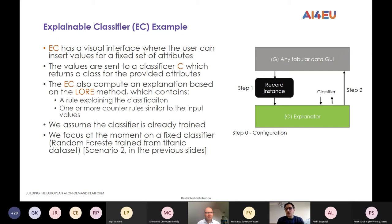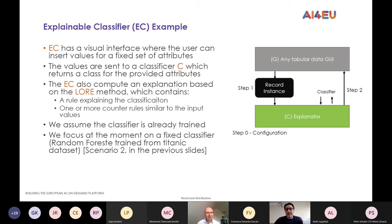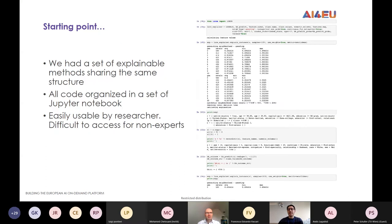Within AI4U in WP7, we developed a library of several explanation methods. Many of these are model-agnostic — they don't make any assumption on the model used — so they are natural candidates to be transformed into components. I want to present the point of view of researchers in the work package who have never worked on this kind of technology, to give an idea of how much effort it takes to get familiar with this approach.